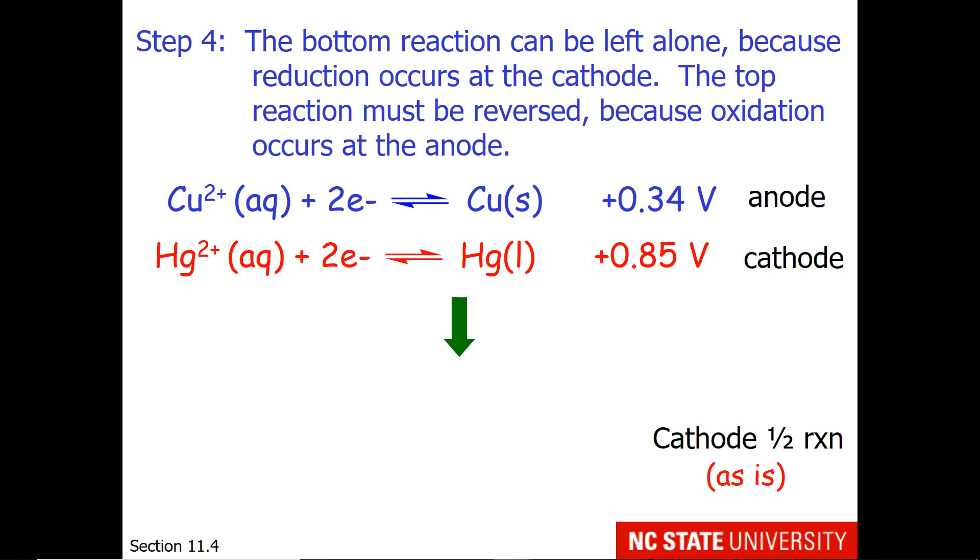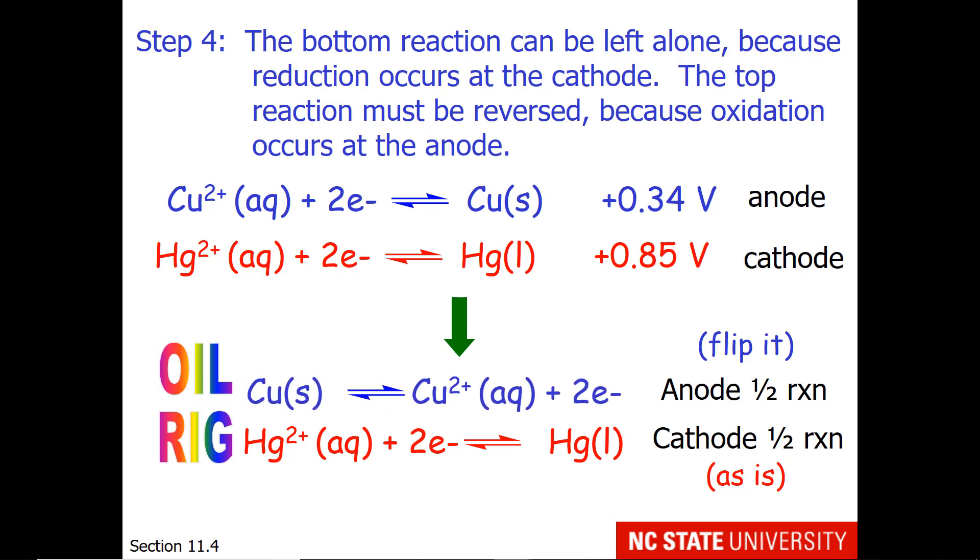So the cathode half reaction I will leave as is. Remember that reduction is gaining electrons, so I will have the electrons on the reactant side. The anode half reaction I am going to exchange the reactants and the products. That's what I mean by flip it. So oxidation is losing electrons. So I'm going to take this top reaction and turn it around. You notice that the copper solid is now on the reactant side, and the copper 2+ and the two electrons are now on the product side. And it's definitely an oxidation because we are going from copper 0 to copper +2.